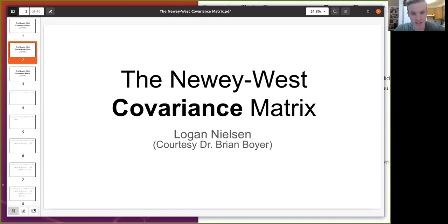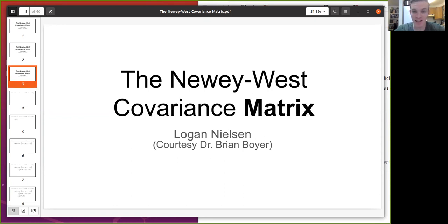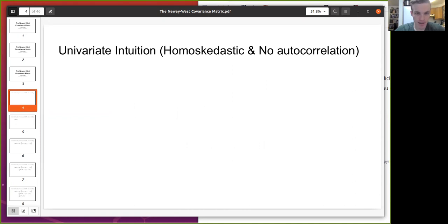So a couple basics. The Newey-West covariance matrix involves covariances and it's a matrix, so I'm going to assume a little bit of knowledge of both of those and we'll move from there. So first off, Newey-West can be understood pretty easily after understanding the univariate intuition.